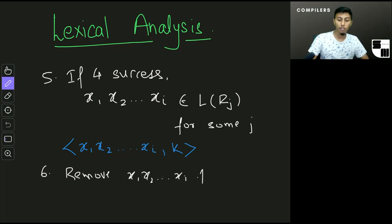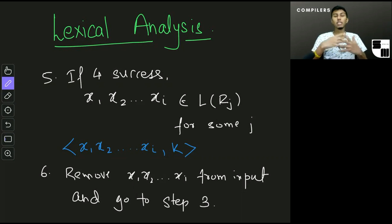And the next step is to just remove x1, x2 and so on up to xi from the input. Remove from input and then we just reset to step 3, which was to consider the input as x1, x2 and so on up to xn, and then check whether it belongs to L of R, and then identify which Rj it belongs to.